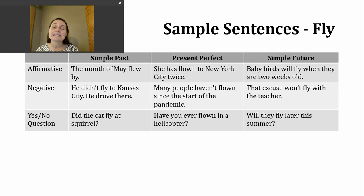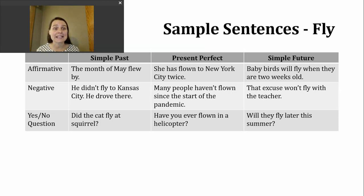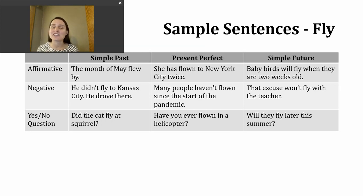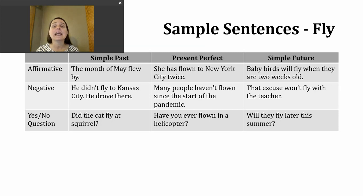To make a negative simple past sentence, I'm going to use did not and then the base verb fly. Native speakers often use the contraction didn't, and that's fine — use whatever feels easiest for you. Here's an example of a negative sentence in the simple past: He didn't fly to Kansas City. He drove there.